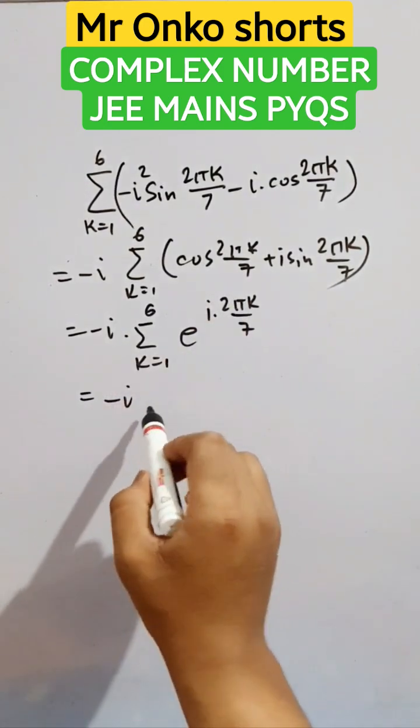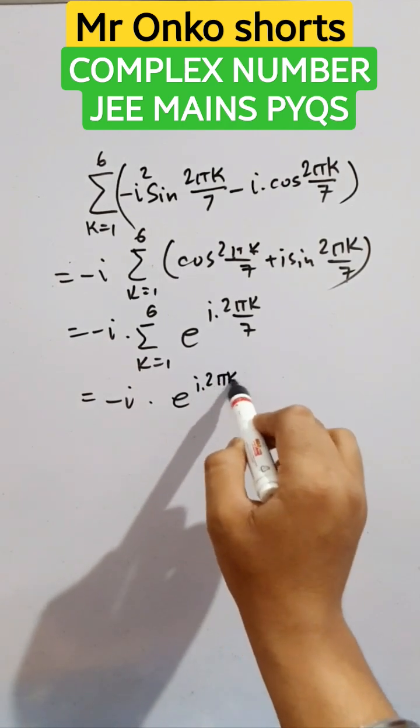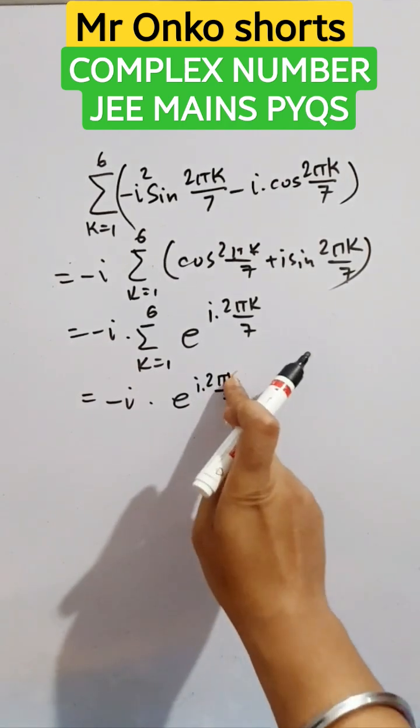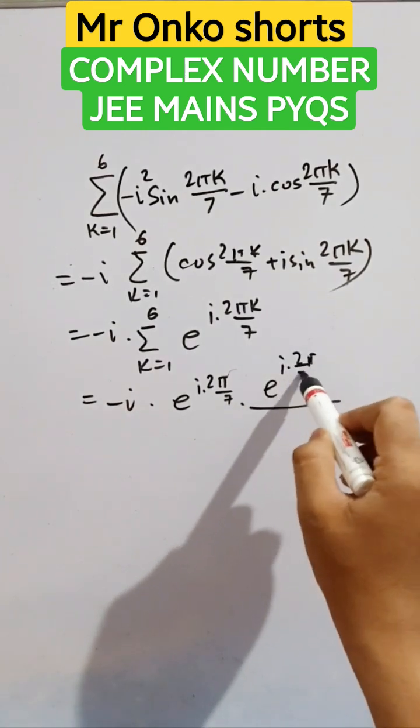Now, solving this summation, it is just a GP with first term this and common ratio also this.